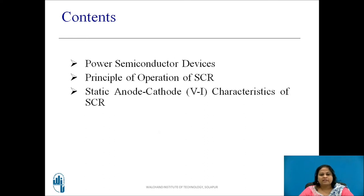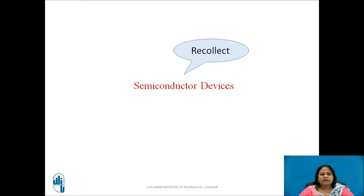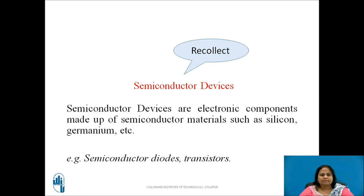These are the contents we will be covering in this session. We all have studied and used different semiconductor devices. Pause this video for a few seconds and write down what a semiconductor device is. The semiconductor devices are electronic components made up of semiconductor materials such as silicon, germanium, etc. Semiconductor diodes and transistors are examples of semiconductor devices.